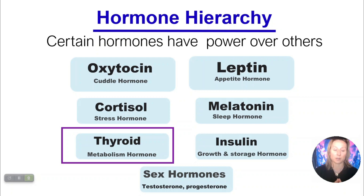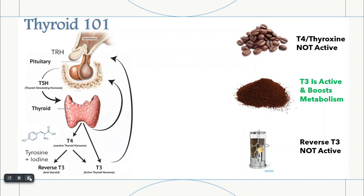Let's dive into thyroid a little bit more. Thyroid hormone gets made originally from tyrosine, which is an amino acid, and iodine. It gets made first into thyroxine or T4, which I call like a coffee bean because it's not active. Then it can get converted into T3, which is active — this is the one which basically runs our metabolism, and I call it the ground coffee. There's also something called reverse T3, which is not active — like locking coffee in a jar. So reverse T3 is inactive T3, meaning we basically only have one major active thyroid hormone.